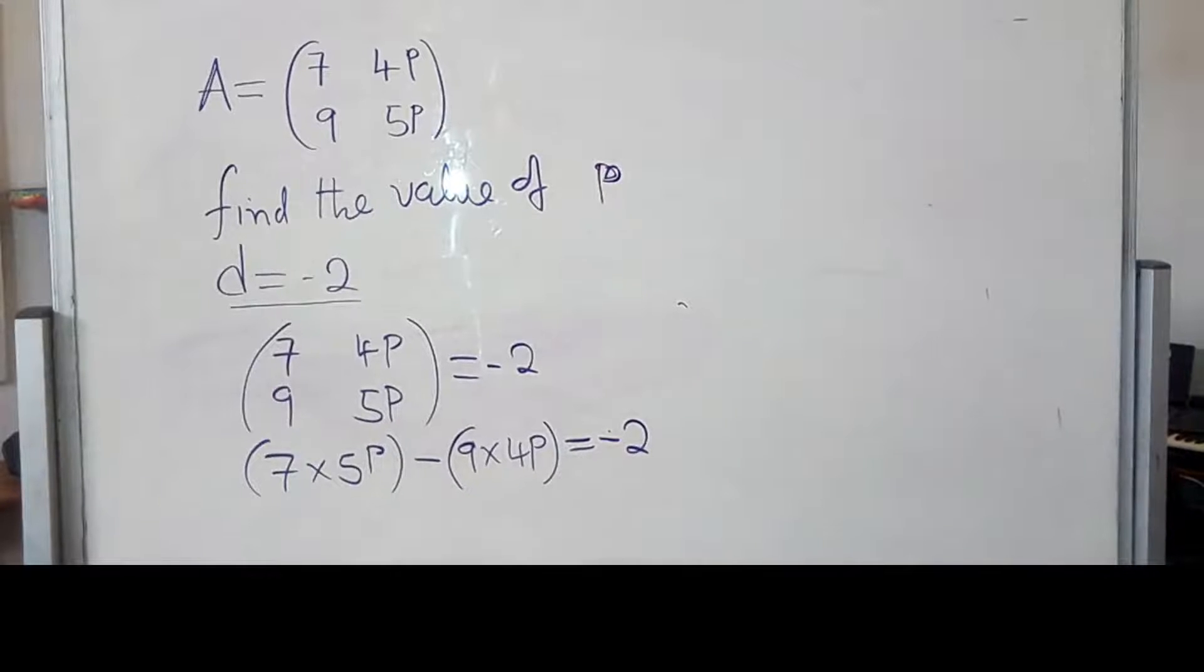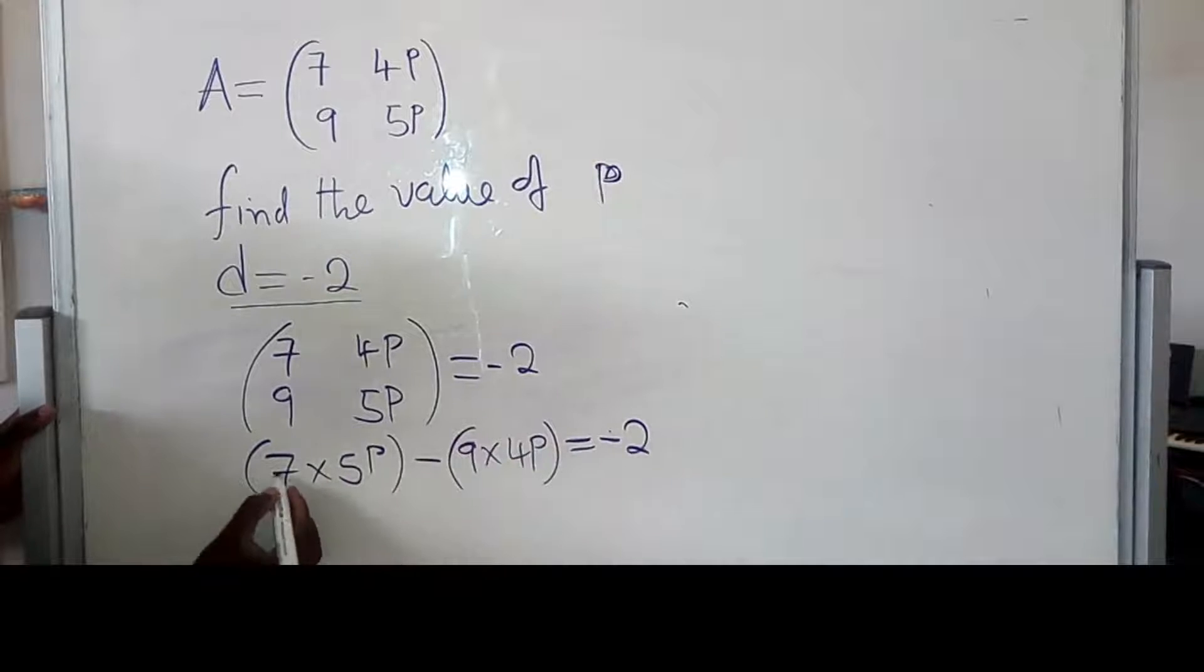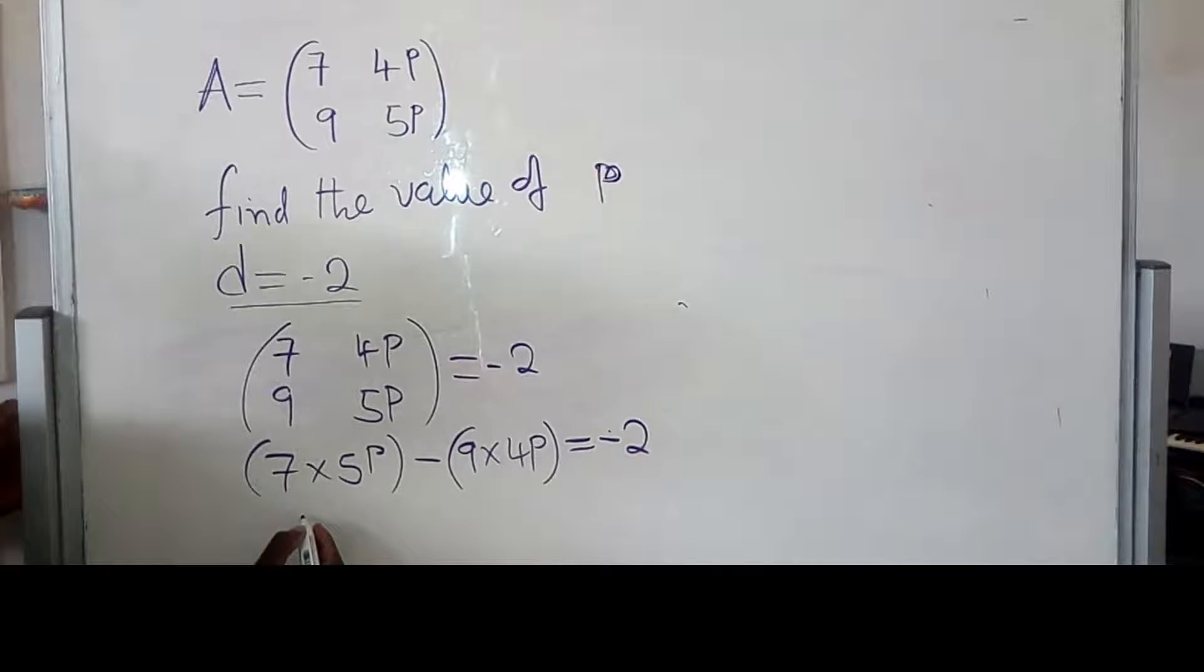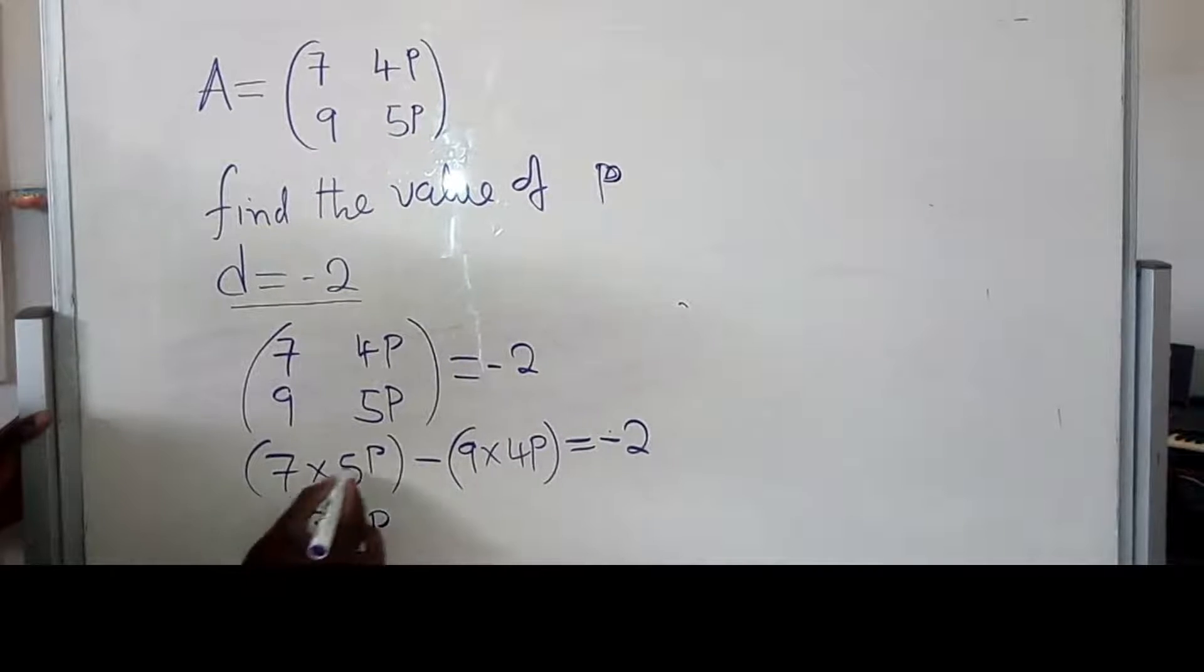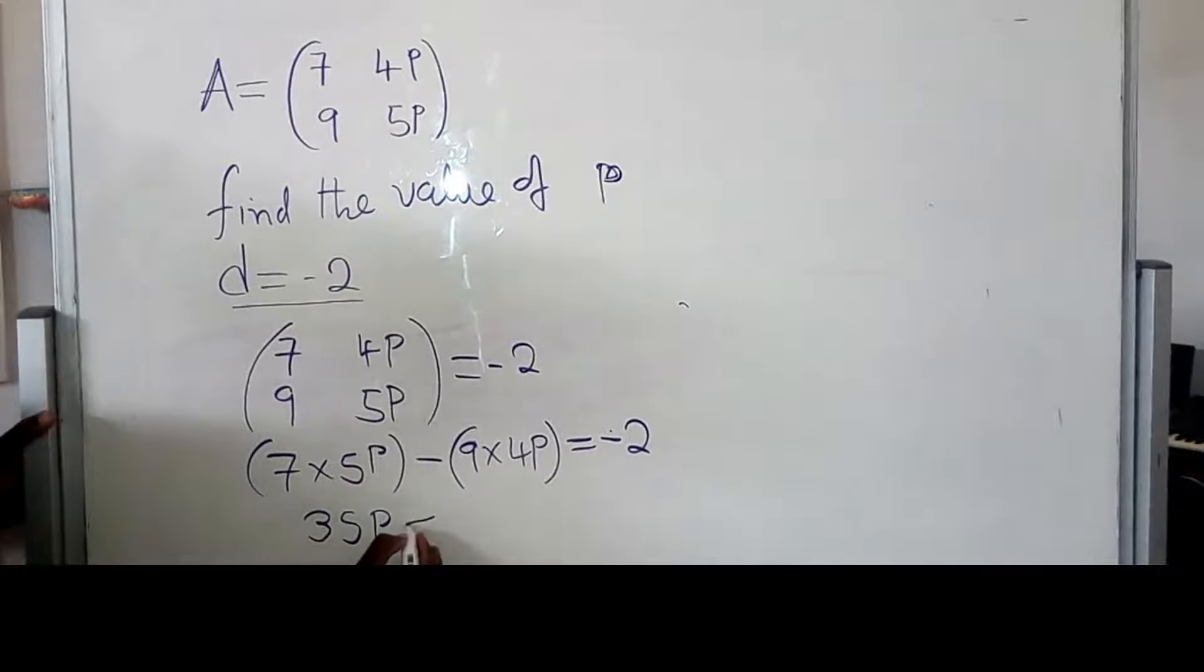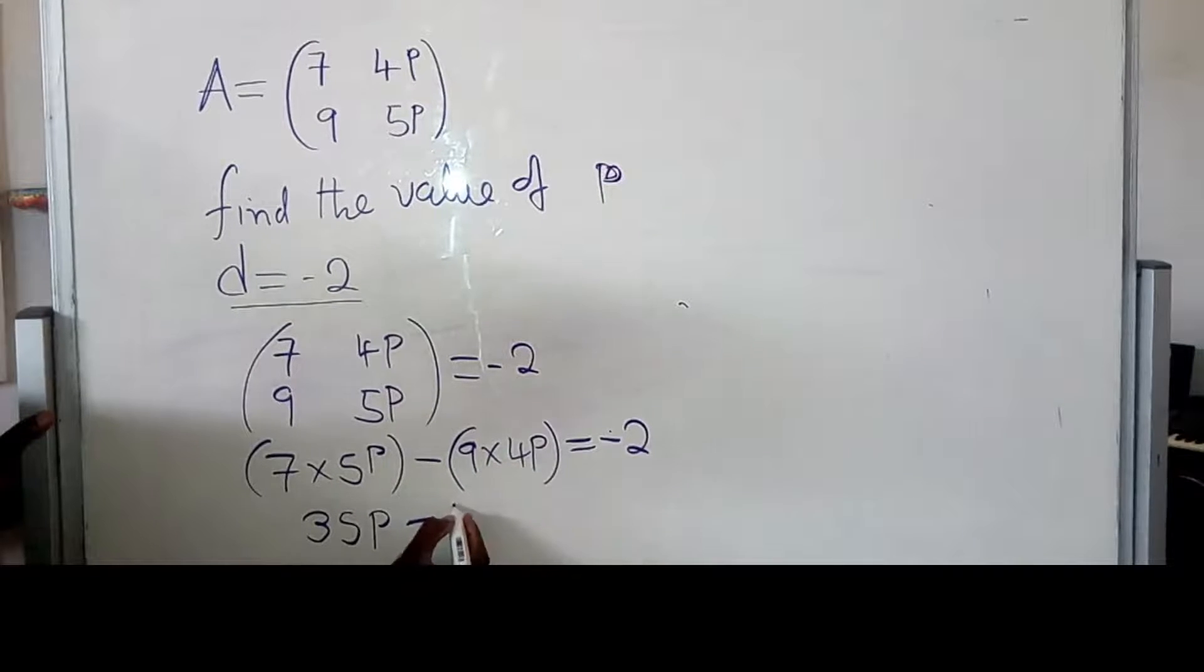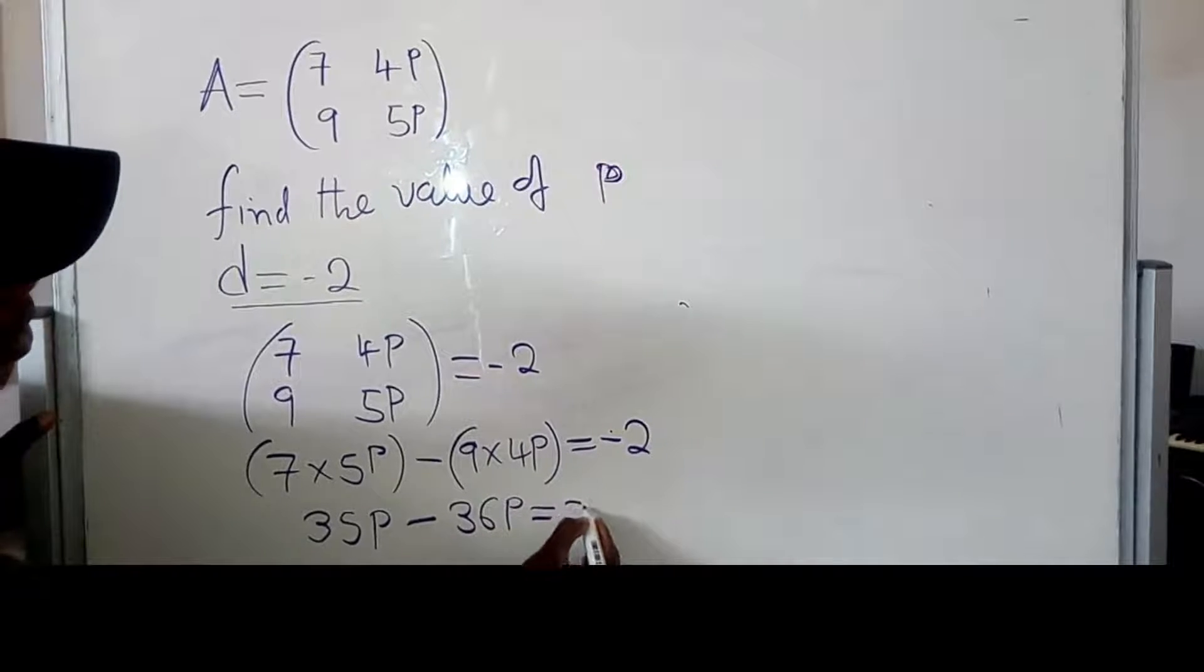So, the next thing here will be to just work out here. We just solve. This will give us 35P. When we multiply 7 times 5P is 35, minus 9 times 4P it will be 36P, which is equal to negative 2.